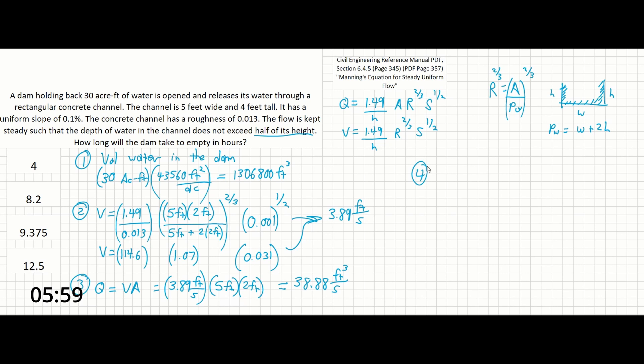So finally, we need to find time. So we have our total volume and we have our flow. If we solve, that'll give us a time component. So in this case, we're going to do 1,306,800 feet cubed over 38.88 feet cubed per second. This is going to give us 33,616 seconds, and just calculating for more unit conversions now.